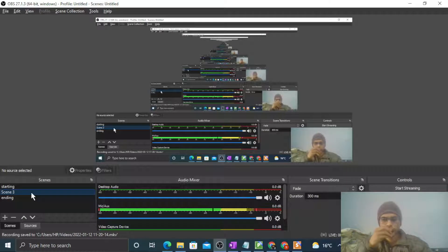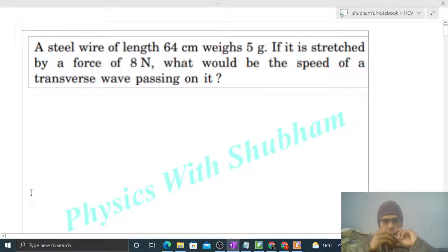Okay hi everyone, so today let's discuss one interesting problem. It says a steel wire of a length 64 centimeter weighs 5 gram. If it is stretched by a force of 8 Newton, what would be the speed of a transverse wave passing on it?